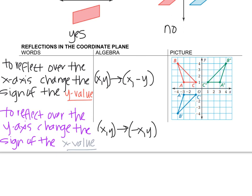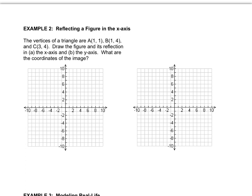Let's look at an example. The vertices of a triangle are A(1, 1), B(1, 4), and C(3, 4). Draw the figure and its reflection in the x-axis and also in the y-axis. So we're going to split this up. We're going to say this is going to be letter A, where they want the x-axis, and this will be letter B, where they want the y-axis. I'd like you to pause the video, and I would like you to graph the triangle in both grids.